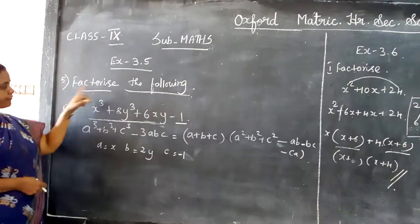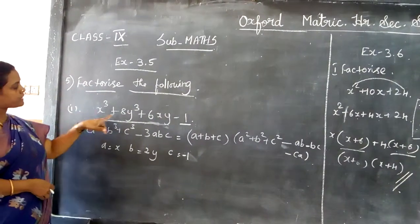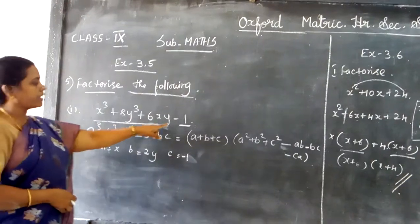Good morning students. Factorize the following equation: x³ + 8y³ + 6xy - 1.